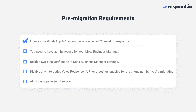Before migrating your phone number, you should be aware of a few requirements. One, your WhatsApp API account is a connected channel on Respond.io. Two, you have admin access to your Meta Business Manager account. Three, your WhatsApp number two-step verification is turned off in Meta Business Manager — you'll find a link in the video description explaining how to disable it. Four, you've disabled interactive voice responses and other automatic greetings on the phone number you are migrating.